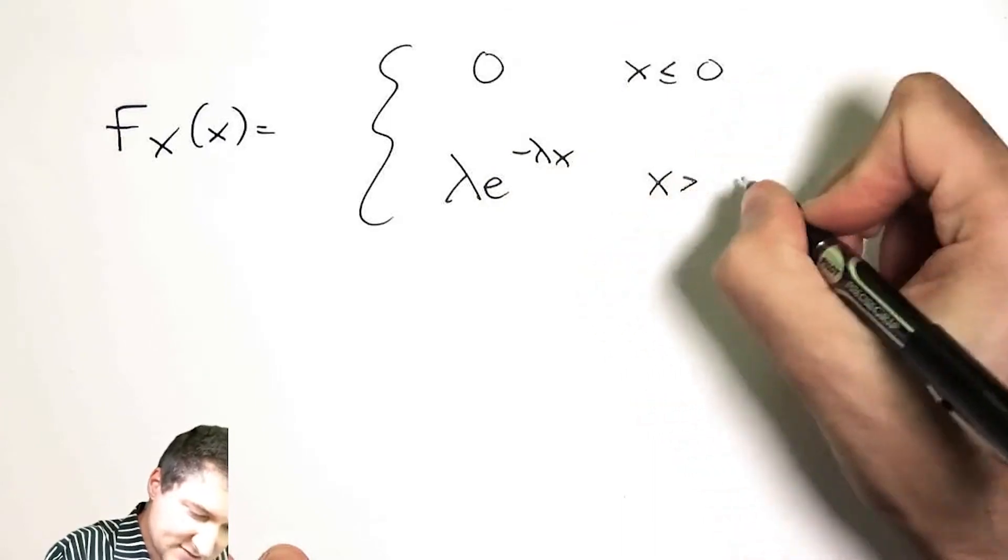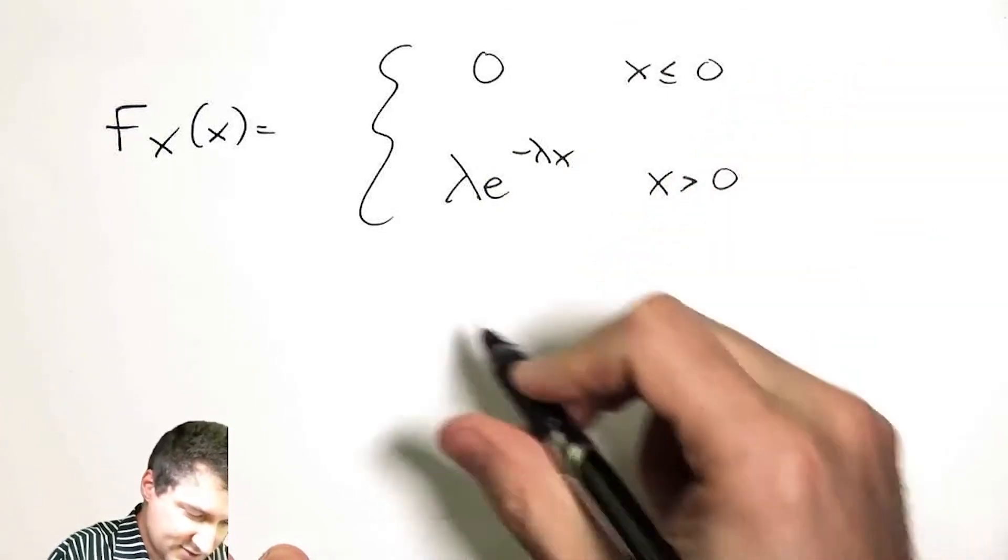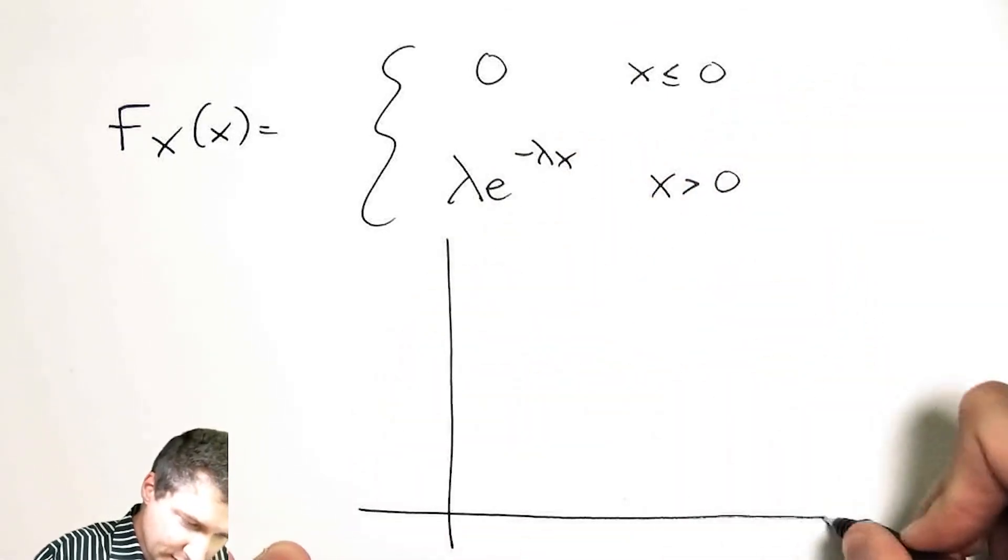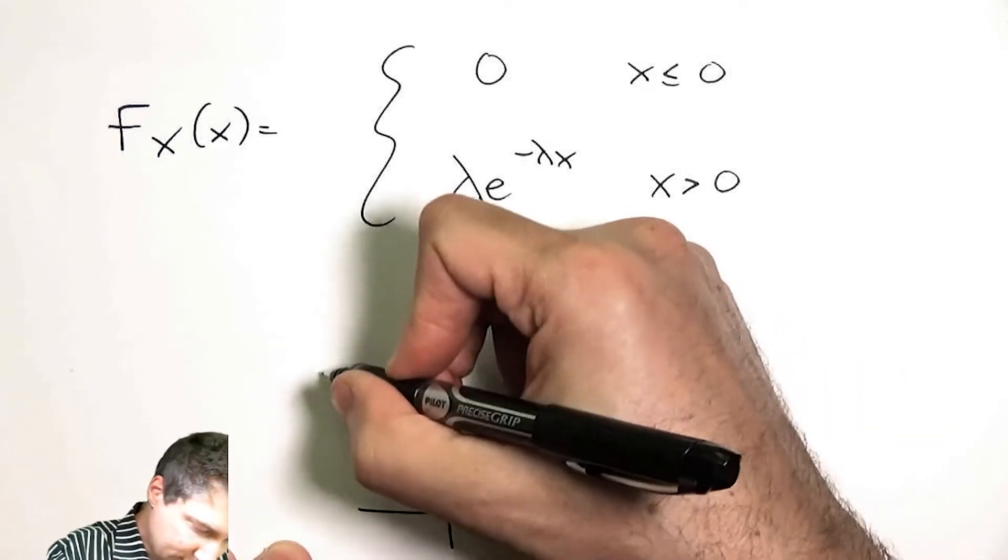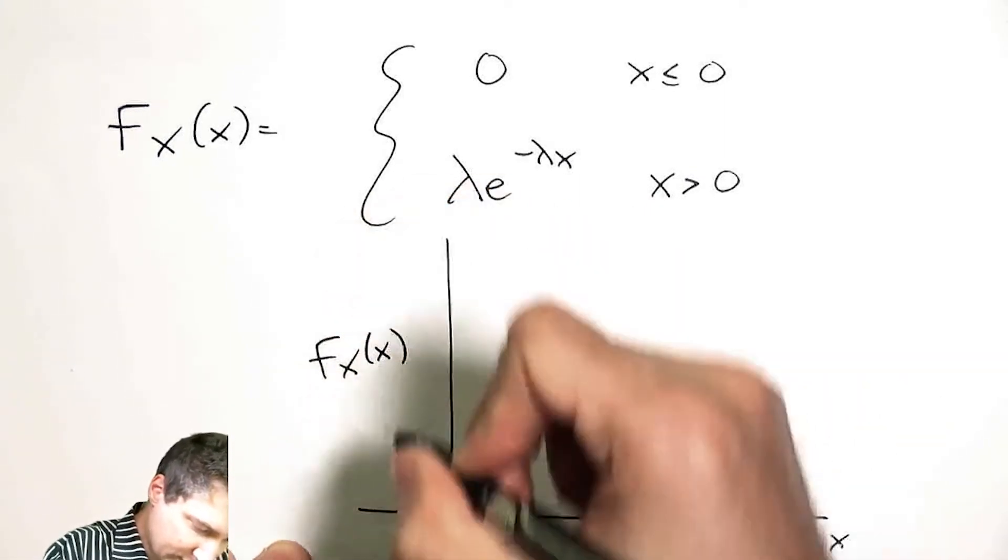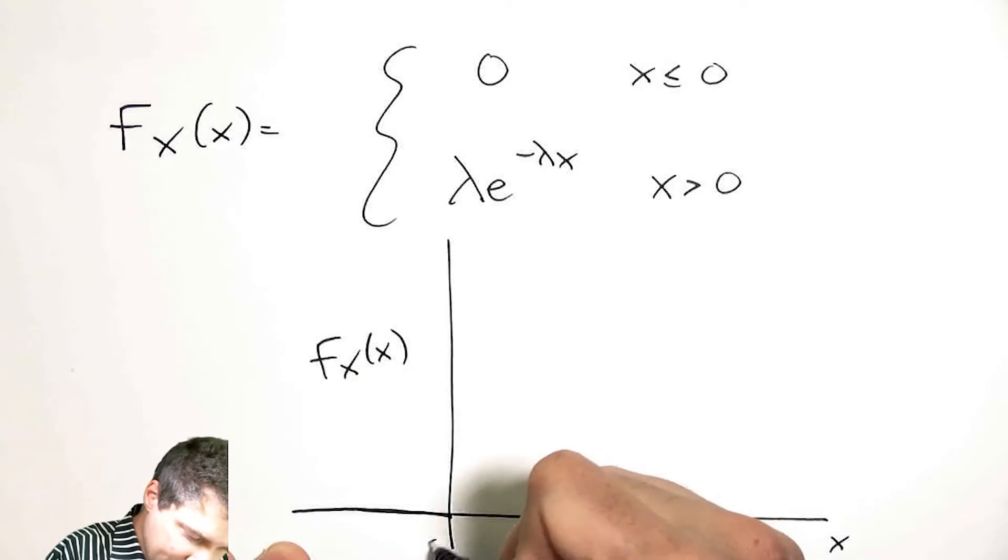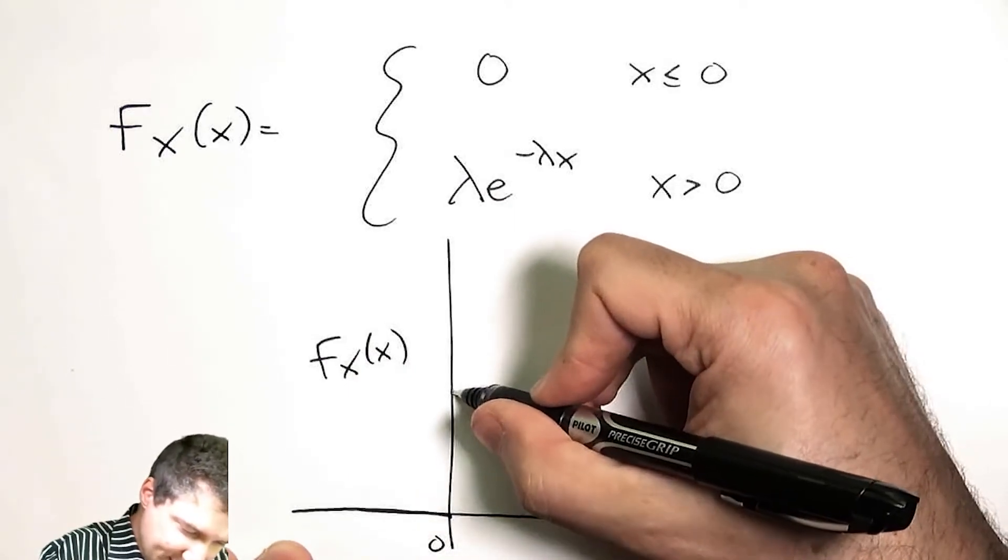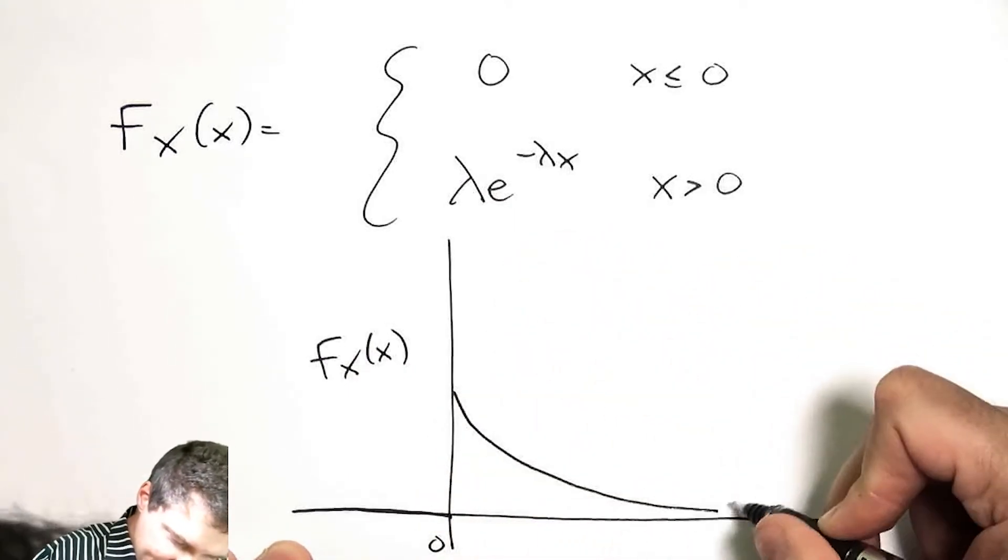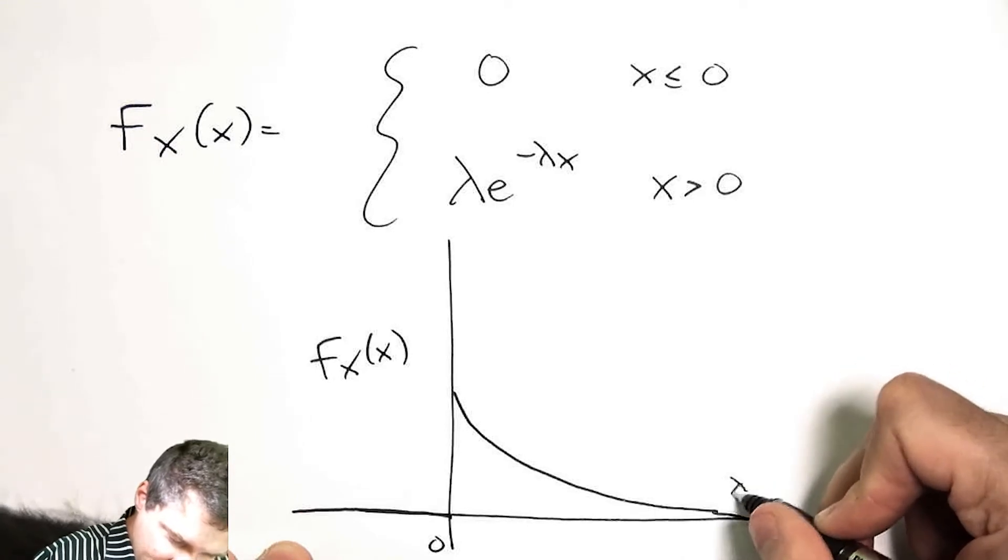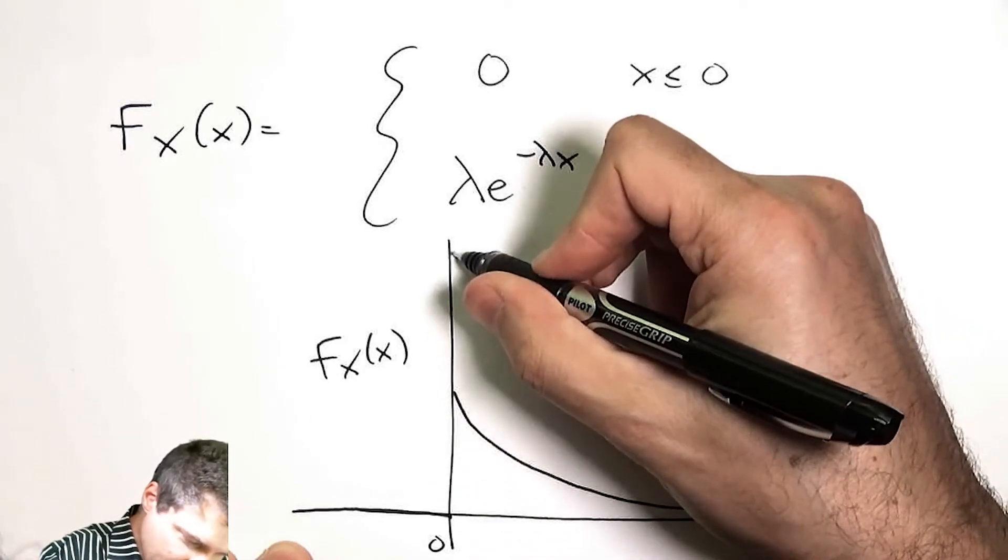The plot of that looks like zero up to a point and then I have this exponential decay down to zero.